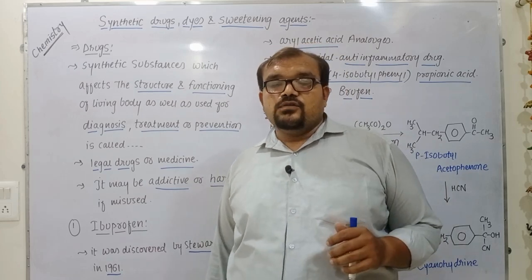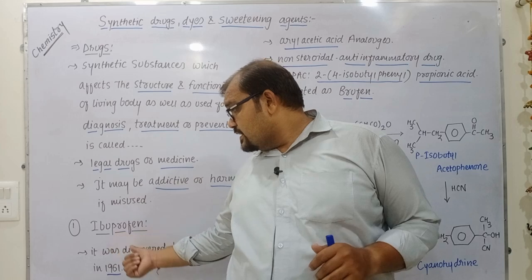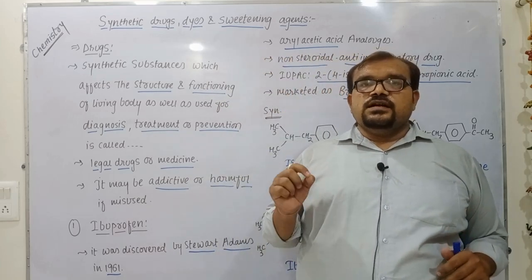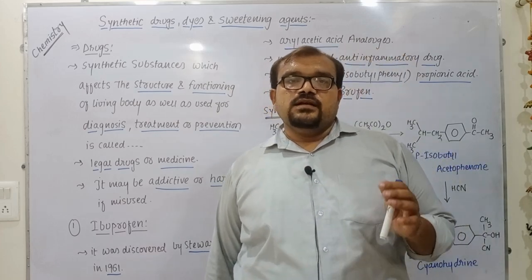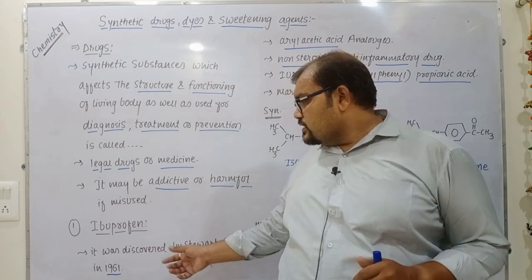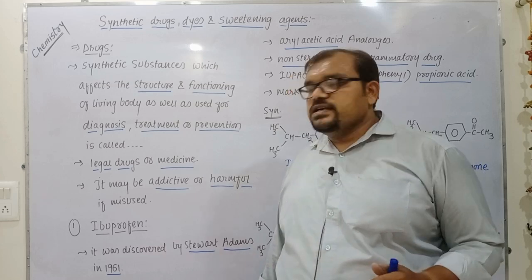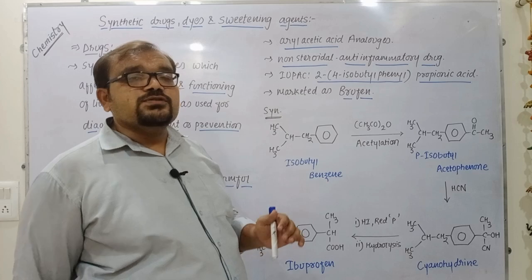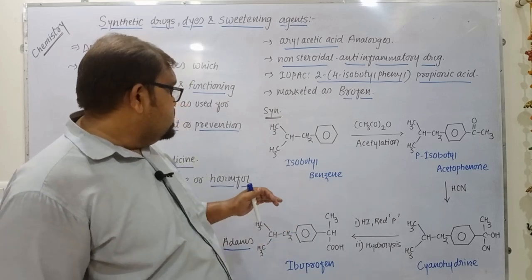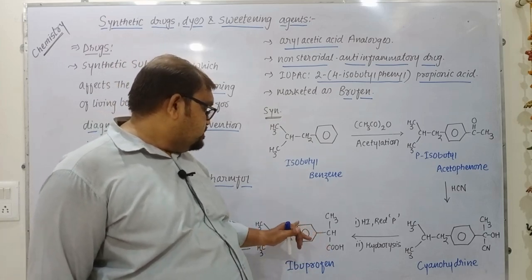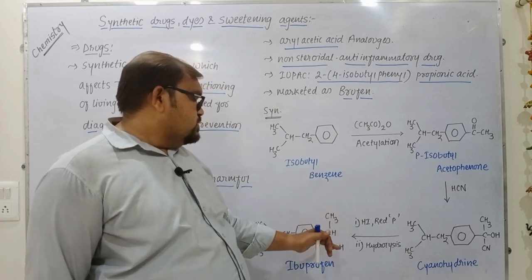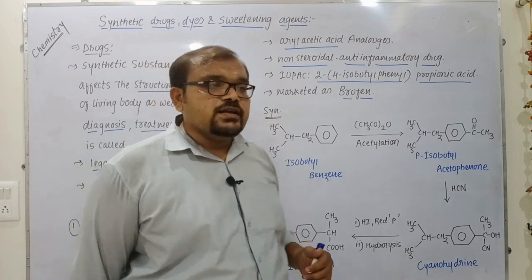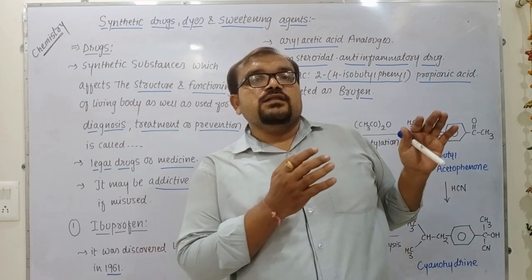Today we discuss about three drugs, out of which the first one is ibuprofen. This drug was first defined by scientist Stuart Adams in the year 1961. It is an aryl acetic acid analog — as we can see in the final structure of ibuprofen, there is an aryl group and an acetic acid group — so it is considered an aryl acetic acid derivative or analog. It is also a non-steroidal anti-inflammatory drug.